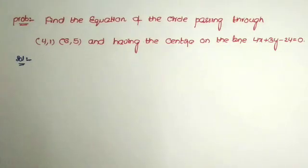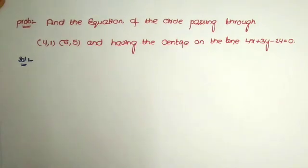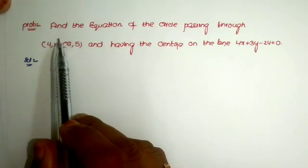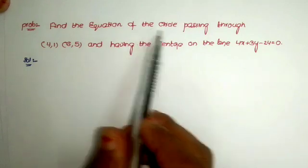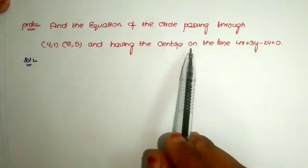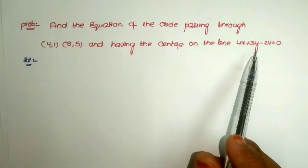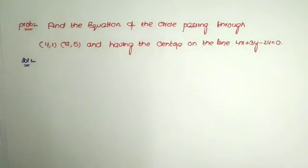Good morning everyone, welcome back to Shartha Math channel. In this video I am explaining the most important SI question from the topic circles. These problems are very useful to students to get good marks in the examination. The question is: find the equation of the circle passing through the points (4, 1) and (6, 5), and having the center on the line 4x + 3y - 24 = 0.